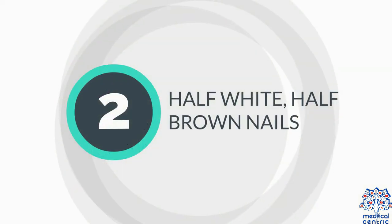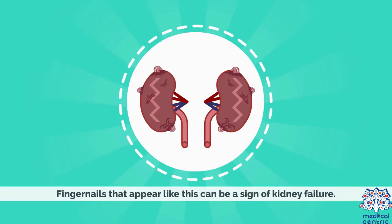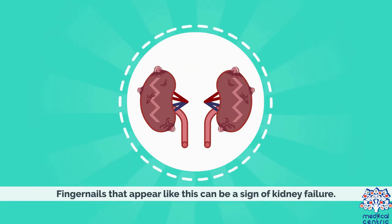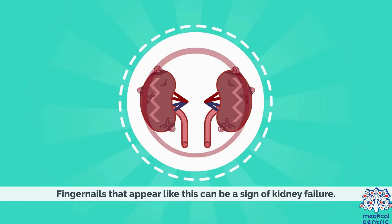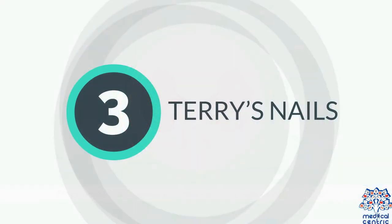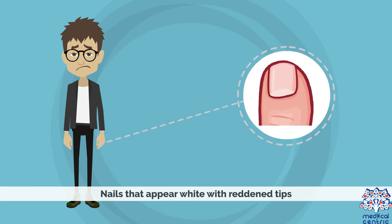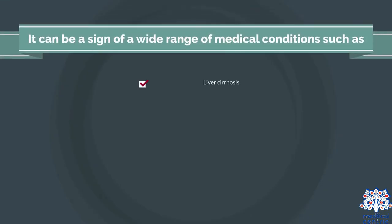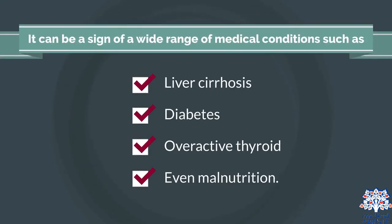Half white, half brown nails: fingernails that appear like this can be a sign of kidney failure. Nails that appear white with reddened tips can be a sign of a wide range of medical conditions, such as liver cirrhosis, diabetes, overactive thyroid, or even malnutrition.